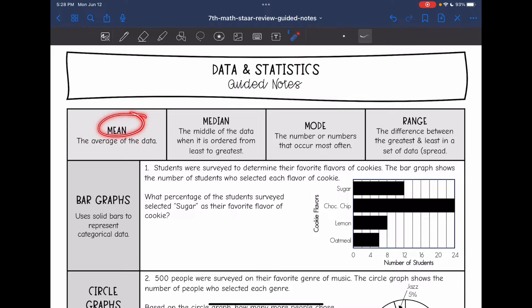So mean, remember that's just the average of the data. You will add all of the data points together and then divide by however many data points there are. The median is the middle of the data when it is ordered from least to greatest.